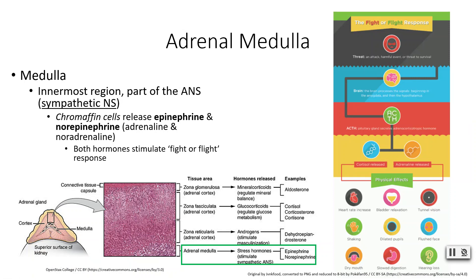We've made it into our adrenal medulla, the innermost region. This is part of your autonomic nervous system, so it has a neuroendocrine function. The chromaffin cells within your adrenal medulla are responsible for releasing epinephrine and norepinephrine — also called adrenaline and noradrenaline. These hormones are responsible for your fight-or-flight and rest-and-digest mechanisms. During fight or flight, we increase heart rate, decrease bladder effects, dilate pupils, and slow digestion. Your adrenal medulla is part of the sympathetic division of your autonomic nervous system.